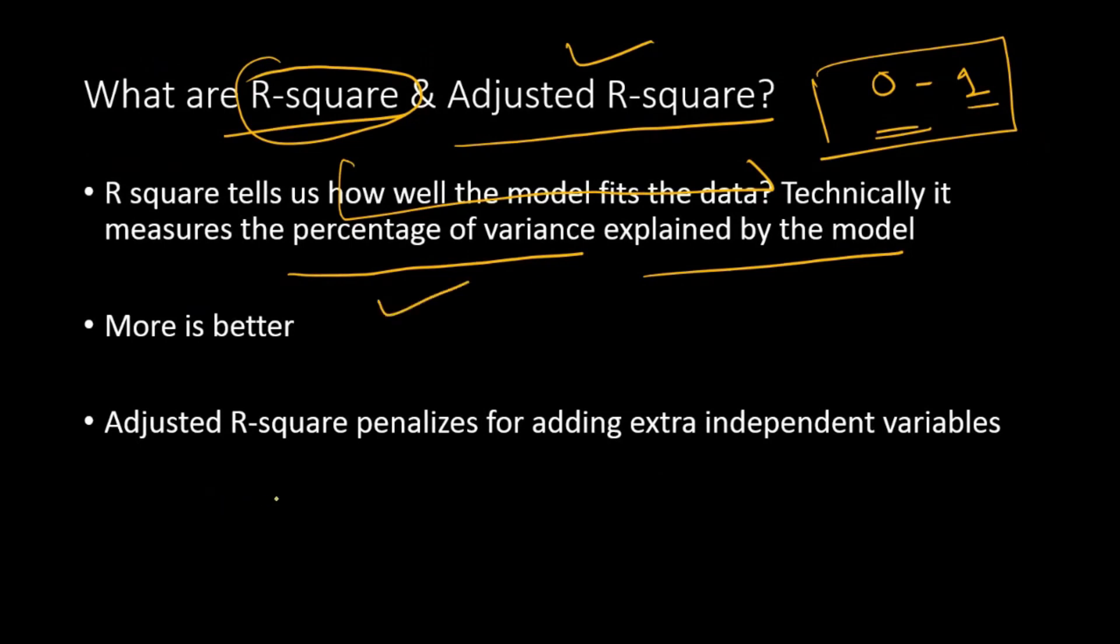Adjusted R-square is another version of R-square which penalizes for adding extra independent variables. We always want a parsimonious model—that means a model with the least number of variables. Why? Because if you can achieve high R-square with fewer variables, it's easy to implement and easy to interpret. That's supposedly a good model. If you keep adding more independent variables to the model, the R-square value should ideally go up, but adjusted R-square will go down after a while because it penalizes for adding additional variables.